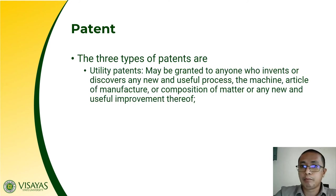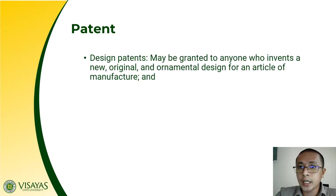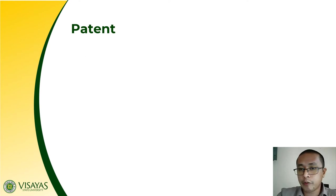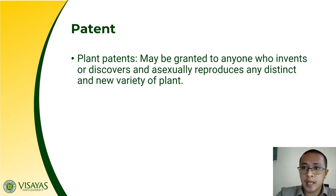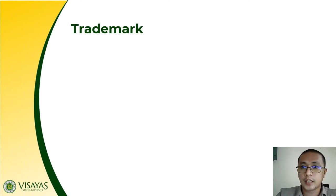There are three types of patents. Utility patents may be granted to anyone who invents or discovers any new and useful process, machine, article of manufacture, composition of matter, or any new and useful improvement thereof. Design patents are granted to anyone who invents a new, original, and ornamental design for an article of manufacture. Plant patents cover anyone who invents or discovers asexually reproduces any distinct and new variety of plant.